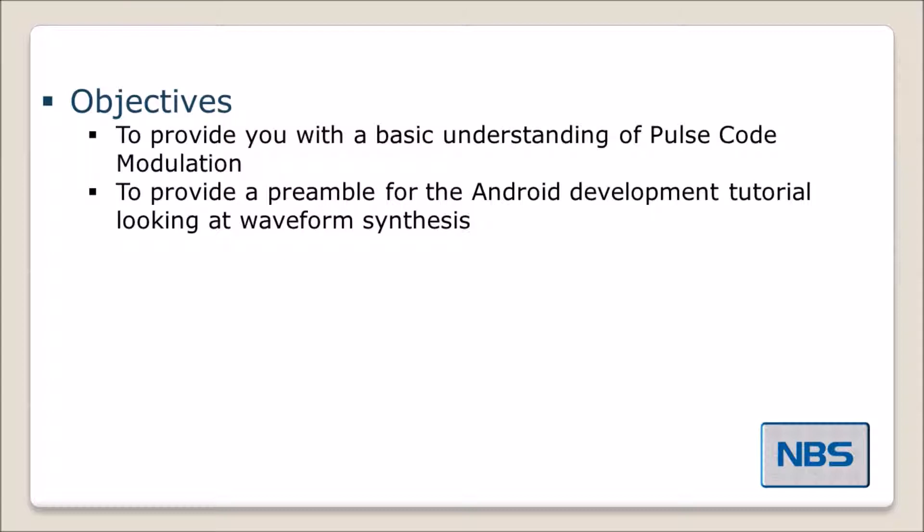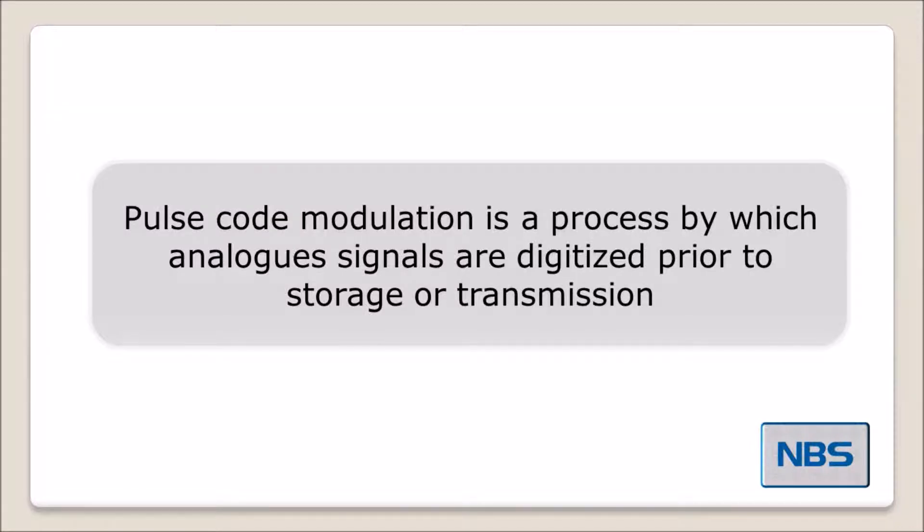So what is Pulse Code Modulation? It's quite simply the process by which analog signals are digitized prior to storage or transmission. In a storage environment, that could be CD audio or .WAV file. In transmission environments, it may be digitized voice for transmission over E1 or T1 circuitry, which has been around for a number of years.